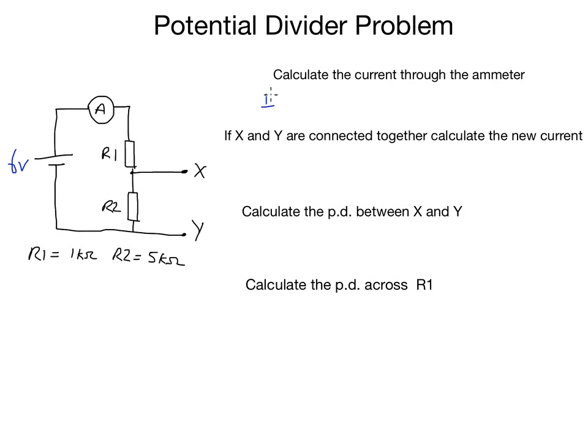I must therefore equal V over R. We know that the PD is 6, and the total resistance of R1 plus R2 is 1kΩ or 1,000 ohms plus 5,000 ohms.